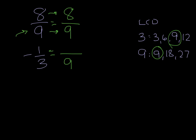Then, for my 3, I need to figure out how do I get from 3 to 9? Well, I multiply by 3. Whatever I do to the bottom, I have to do to the top. So, I also have to multiply my numerator by 3, and that gives me 3 ninths.